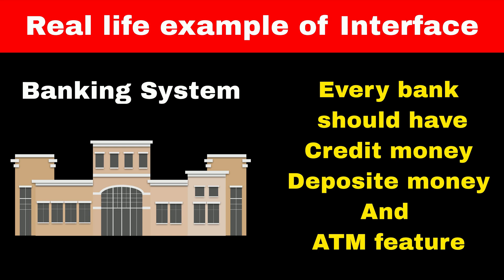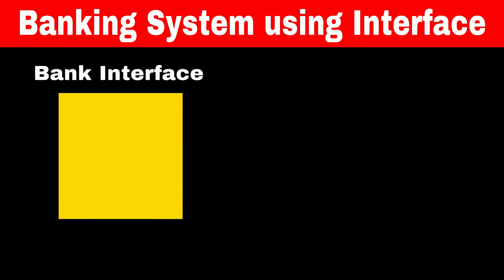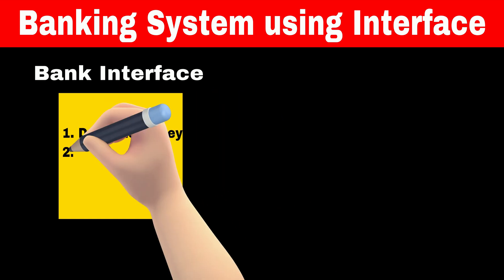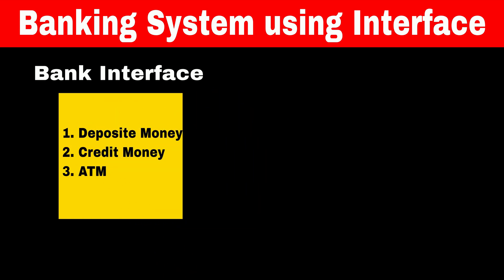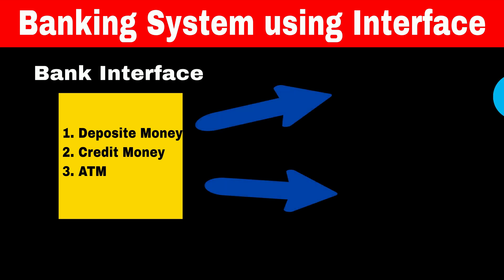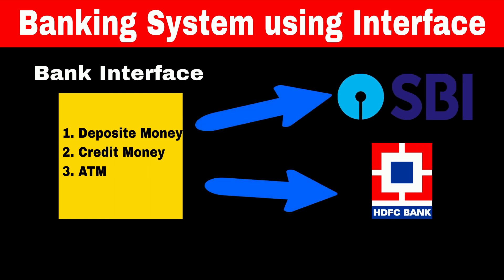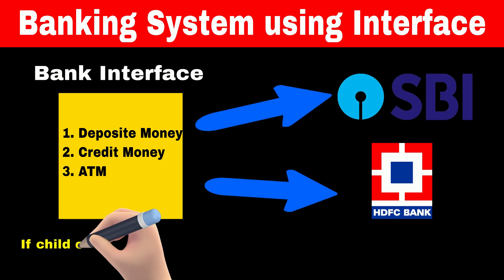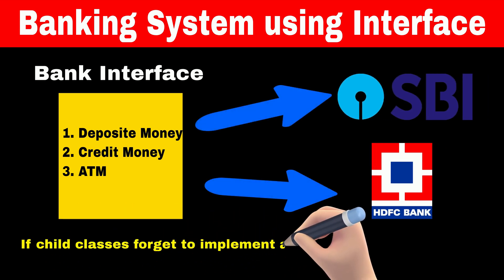To implement this, we will create an interface and list down all the mandatory features in it. All the classes which inherit from this bank interface have to compulsorily implement these features. If they forget to implement it, then Java will throw an error.